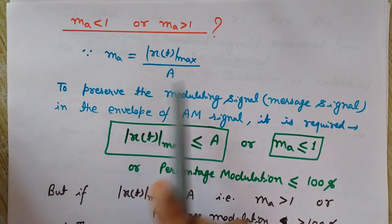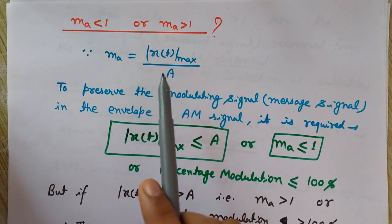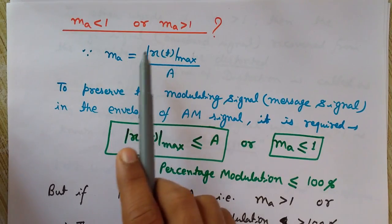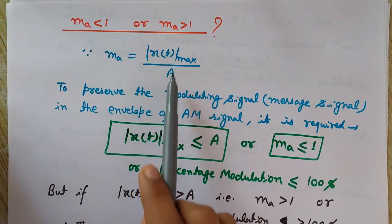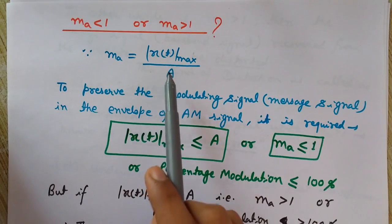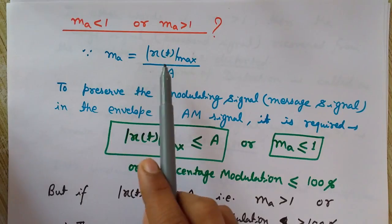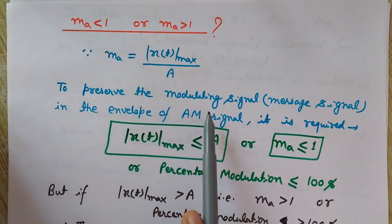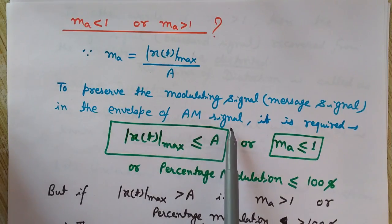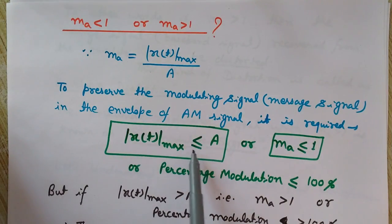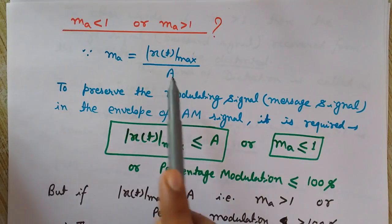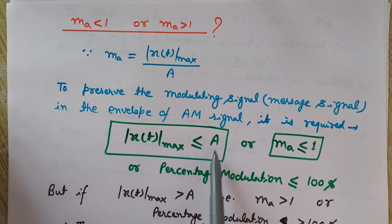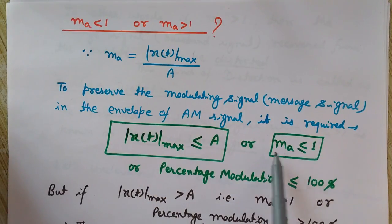If ma equals one, then xt_max and A are the same. If ma is less than one, then A is greater than xt_max. For ma to be greater than one, xt_max must be greater than A. However, to preserve the modulating signal in the envelope of the AM signal, it is required that xt_max should be less than or equal to A — that is, ma should be less than or equal to 1.